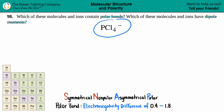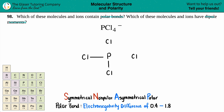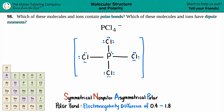For PCl4 minus, we have phosphorus in the middle surrounded by four chlorines — one, two, three, four. Draw a single bond from each chlorine to phosphorus. The chlorines need the octet, so they get six dots each. Phosphorus has five valence electrons; it uses four to make those bonds, leaving one, and the negative charge means we gained one more, giving phosphorus a lone pair. Since it's an ion, bracket it and put a negative charge outside.